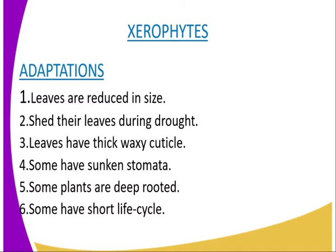There are four main groups of plants: we have the xerophytes, we have the mesophytes, we have the hydrophytes, and we have the halophytes. We are going to start with the first group of plants, which are the xerophytes. Xerophytes are plants adapted to withstand a dry habitat, or to endure conditions of prolonged drought, as in arid and semi-arid areas.